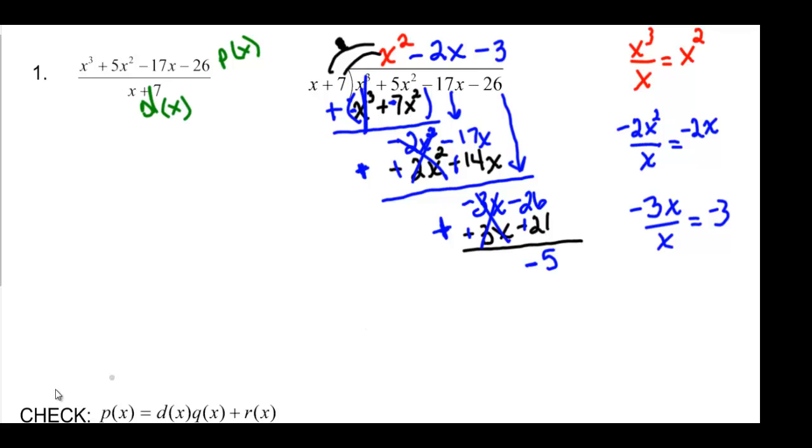And then to check it down here, we're going to take and see if we can get back to this top polynomial. So D of X was X plus 7. And Q of X ended up being X squared minus 2X minus 3.